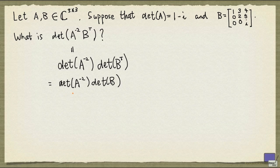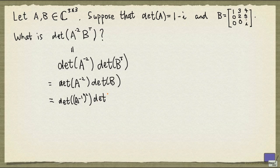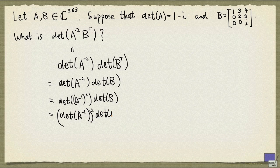As I mentioned before, A to the power minus 2 is the square of A inverse, so I can write this as the determinant of A inverse squared. And by the property of determinants, I can write this as the square of the determinant of A inverse, times the determinant of B.